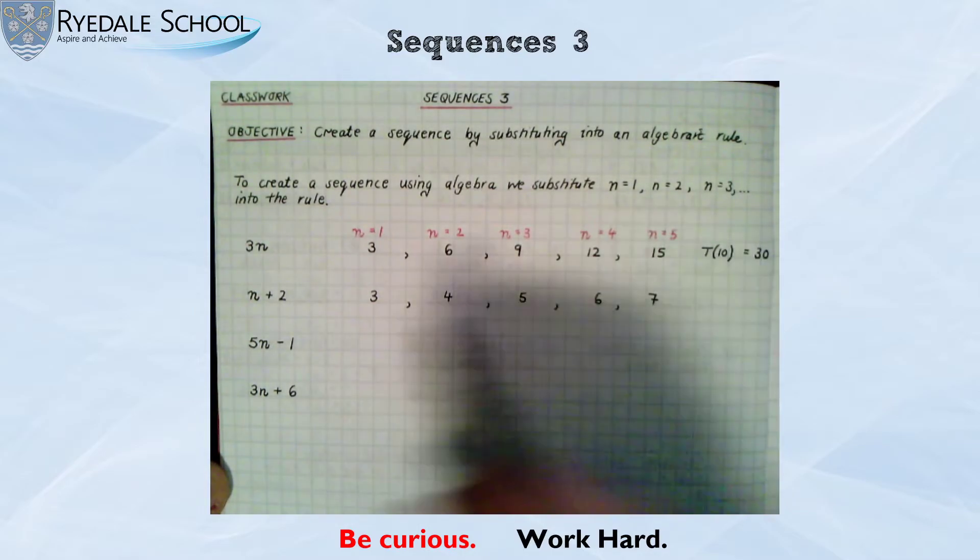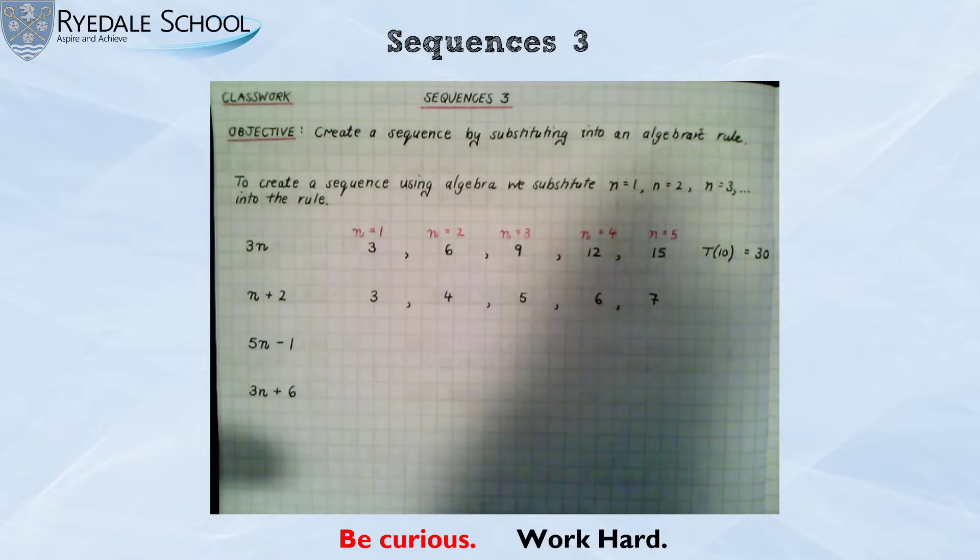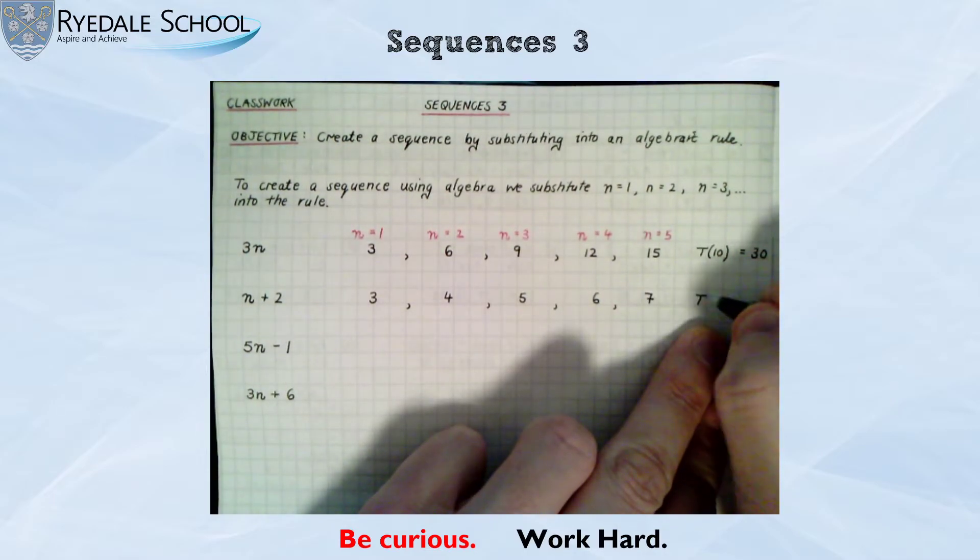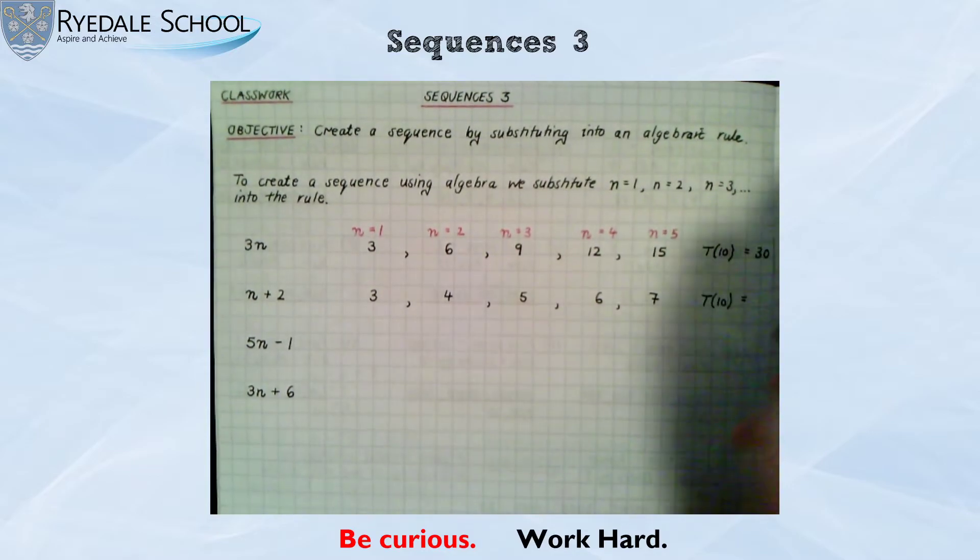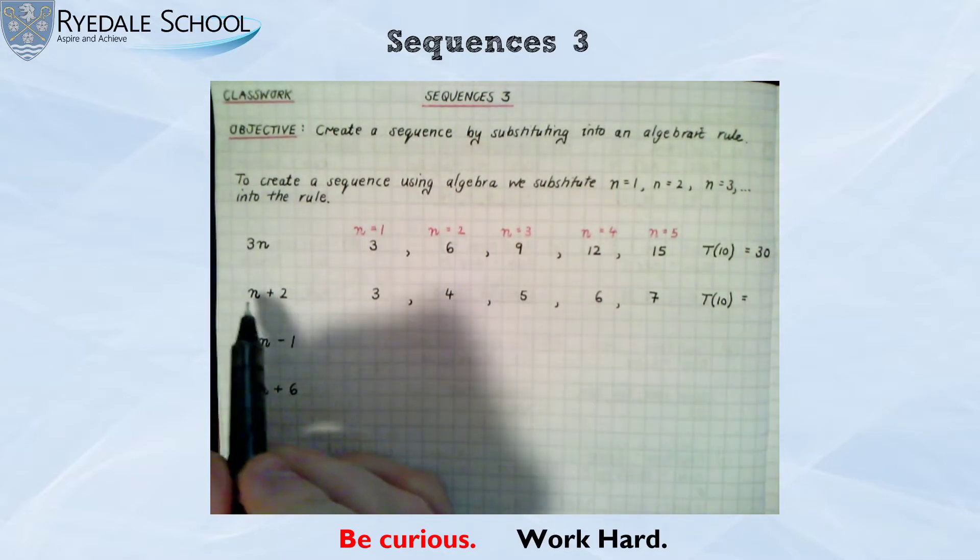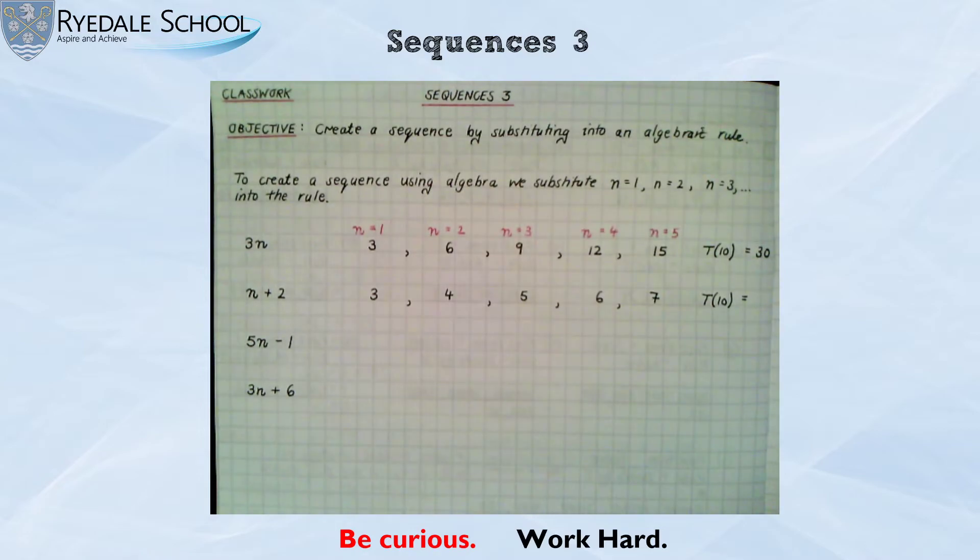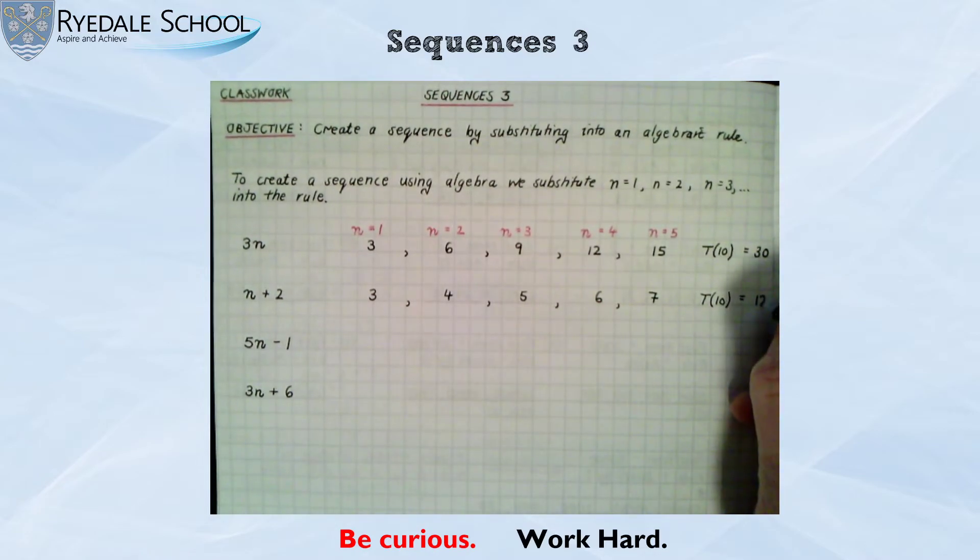Fifth term, 5 add 2 does equal 7. So again, if I wanted the 10th term, I would substitute the number 10 into my rule. I would do 10 add 2. And 10 add 2 would make this 10th term 12.